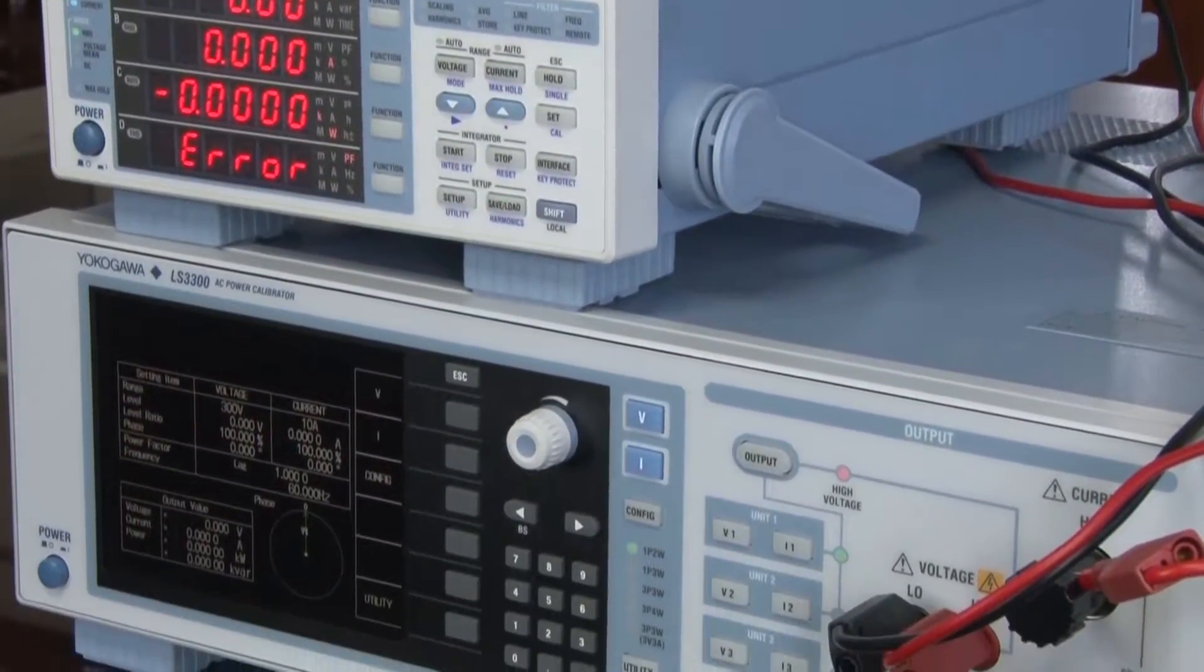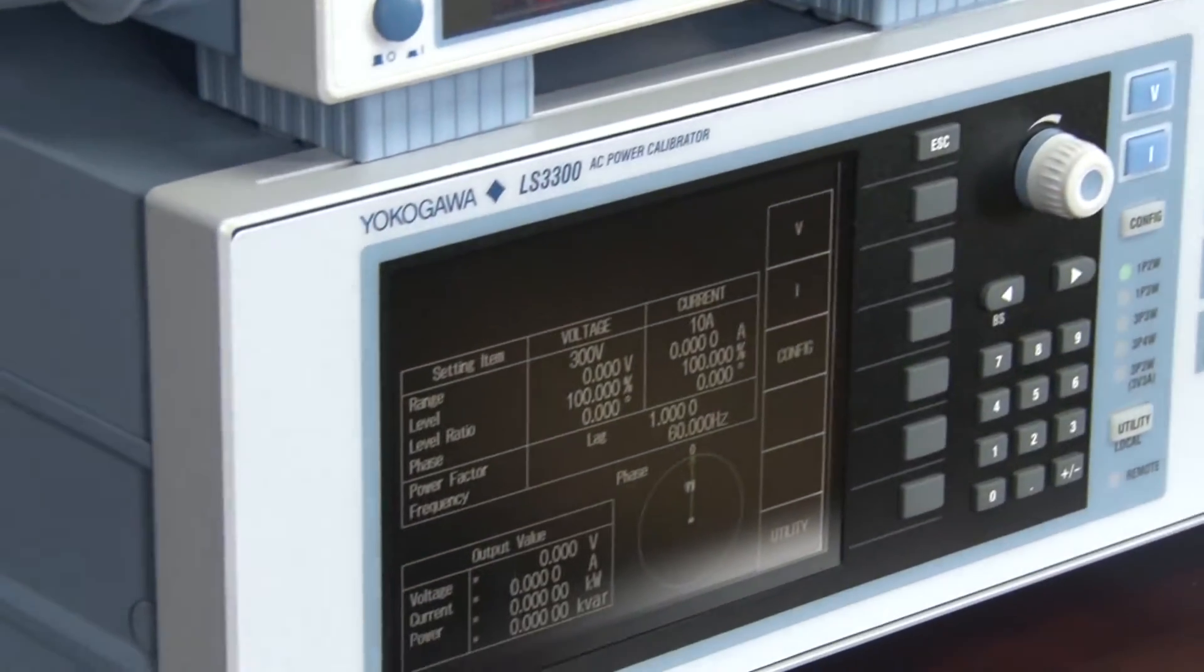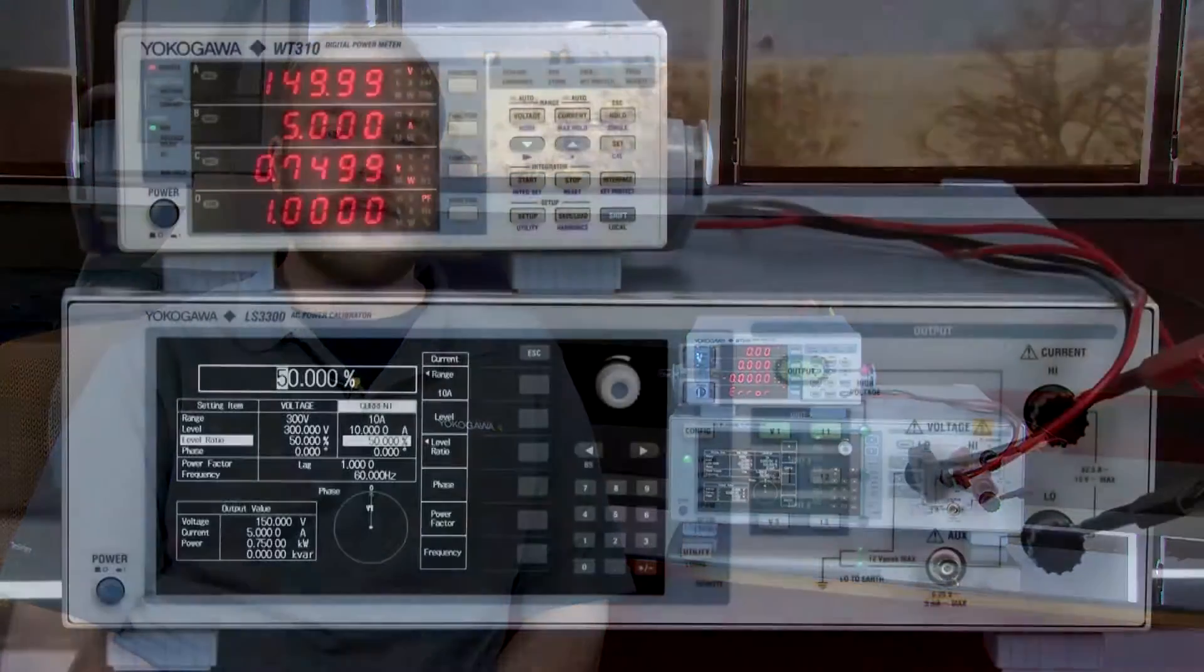Today I will be demonstrating how to perform a calibration test on the Yokogawa WT300 and 300E power analyzer series using the Yokogawa LS3300 AC power calibrator. The test accuracy ratio or TAR will be used to confirm the WT300's accuracy. The TAR will be discussed in further detail later in this video.